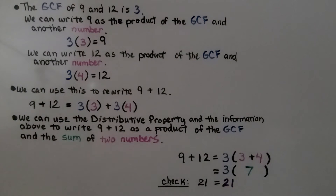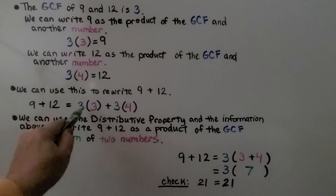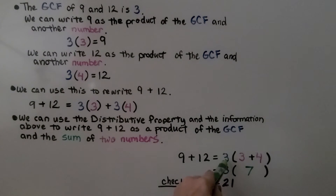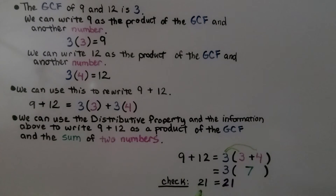Using the distributive property, we can write 9 plus 12 as the product of the GCF (3) and the sum of the two numbers. Both have the 3, so we write one 3 in front of the parentheses: 3 times (3 plus 4). That gives us 3 times 7, which equals 21. We can check: 9 plus 12 is 21, and 3 times 7 is 21 — correct!